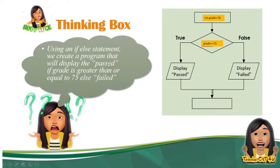It will display 'passed' if the grade is greater than or equal to 75. So: if grade is greater than or equal to 75 — passed. Else, if false — failed. This is the code.